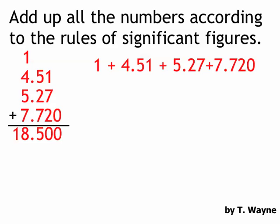But I've got to figure out again where to round this. So I'll look at my numbers and figure out where my sig figs are and my estimated numbers. So the 1 is estimated, and the second problem, 4.51, the 1 is estimated. 5.27, the 7 is estimated, and 7.720, the 0 is estimated in the thousandth place.